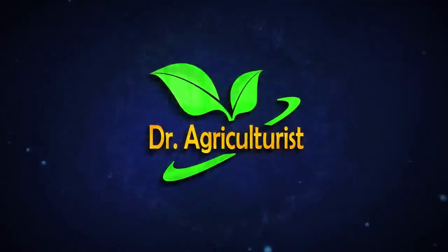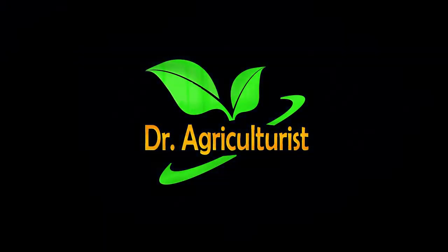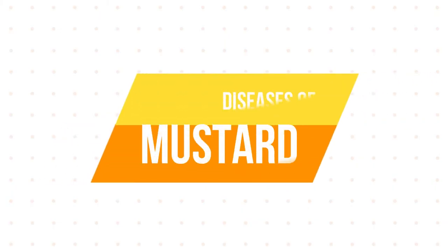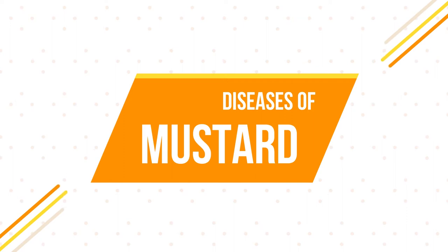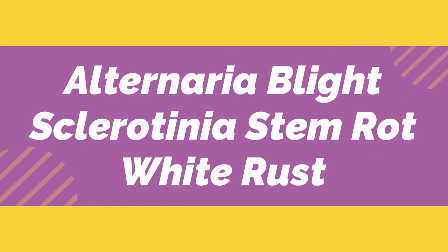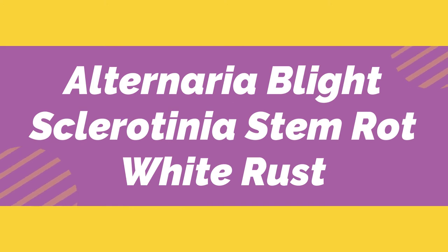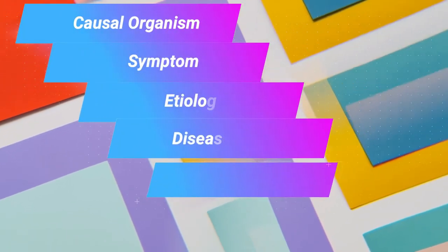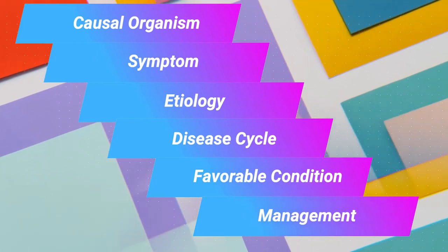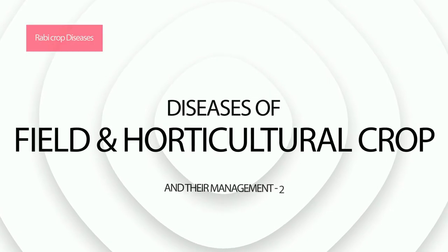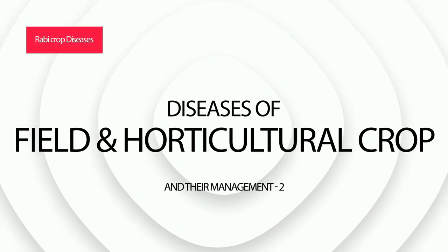Welcome to our channel Dr. Agriculturist. I am Devendra Chaudhary. In this video we are going to discuss various diseases of Mustard like Alternaria Blight, Sclerotinia Stem Rot and White Rust. The diseases will be discussed on the following topics: Causal Organism, Symptom, Etiology, Disease Cycle, Favorable Condition and Management. This is for the course Diseases of Field and Horticultural Crops and Their Management.